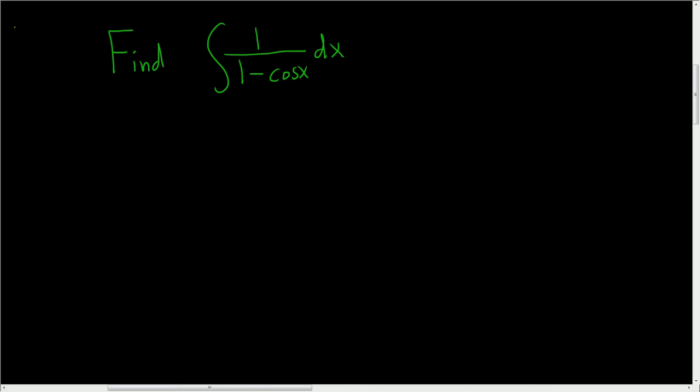Integrate 1 divided by 1 minus cosine x. Solution: If you start by making a u substitution, you'll realize right away that you get stuck because if you let u be the denominator, then du is the derivative of the denominator and that ends up being sine x dx and there's no sine in this problem.